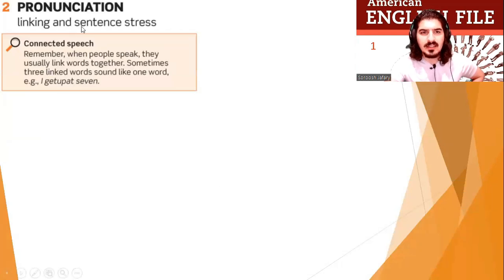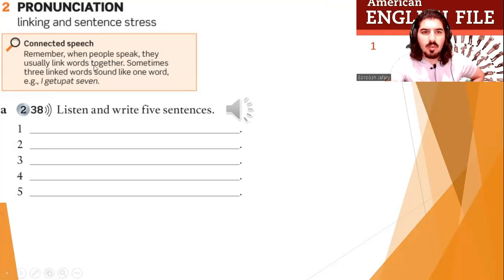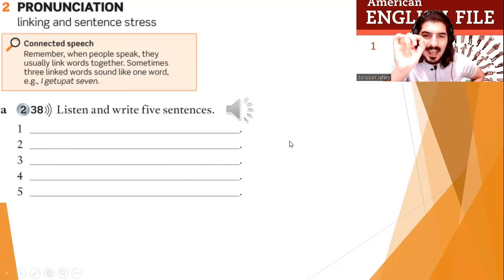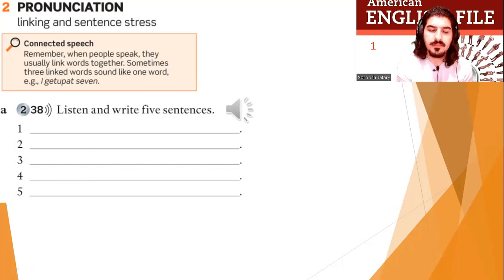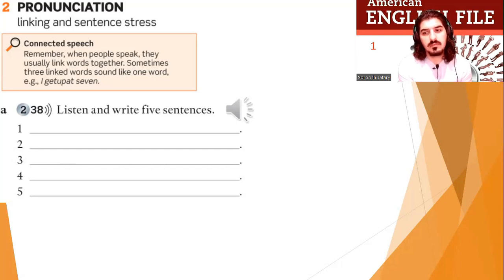Now, pronunciation — linking sounds and sentence stress. When people speak they usually link words together; sometimes three linked words sound like one. For example: 'I get up at seven,' 'I go to school.' Now listen and write five sentences. Track 2.38: one, he wakes up at eight o'clock; two, she works in an office; three, she has a coffee at eleven o'clock; four, he has a lot of homework; five, she has an interesting day.